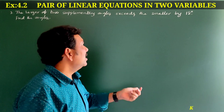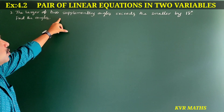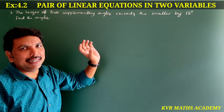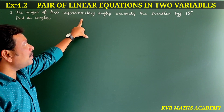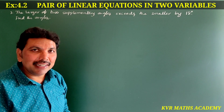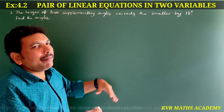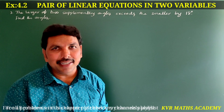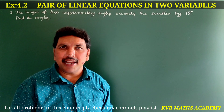Let's go through the third question in Exercise 4.2. The larger of two supplementary angles exceeds the smaller by 18 degrees. Find the angles. Supplementary angles means the sum of the two angles is equal to 180 degrees. Those are called supplementary angles.